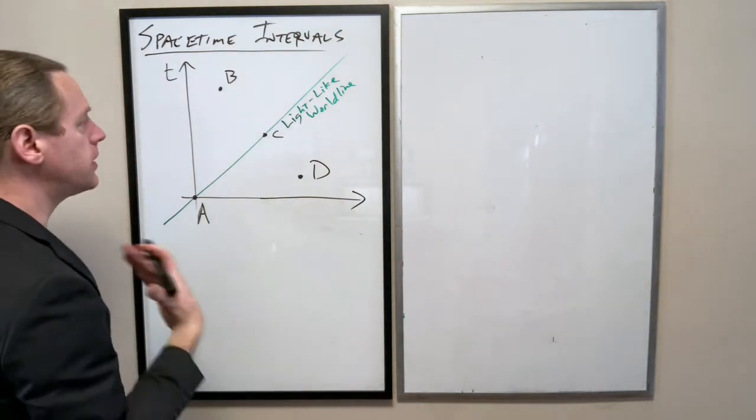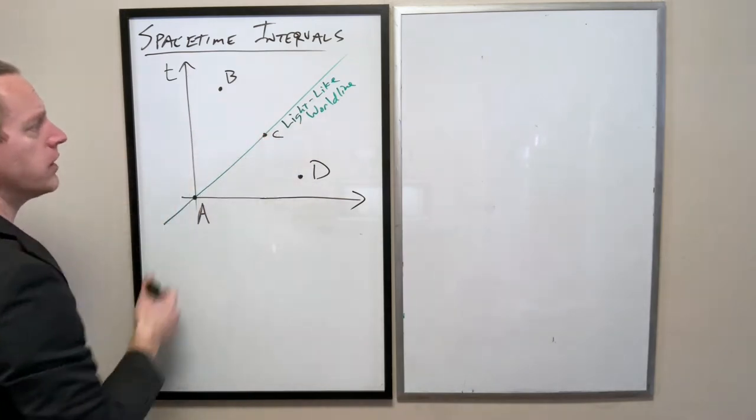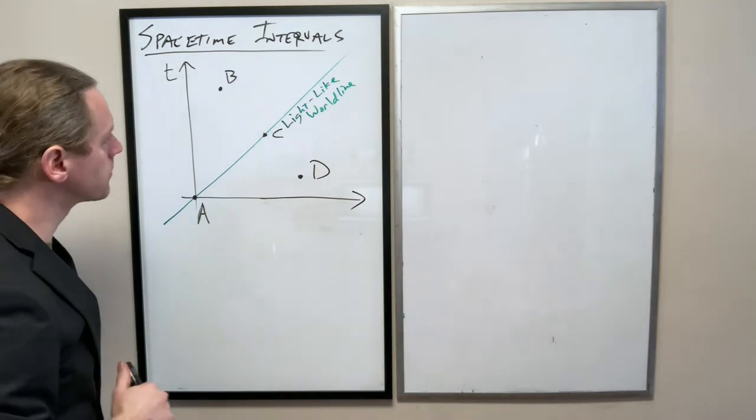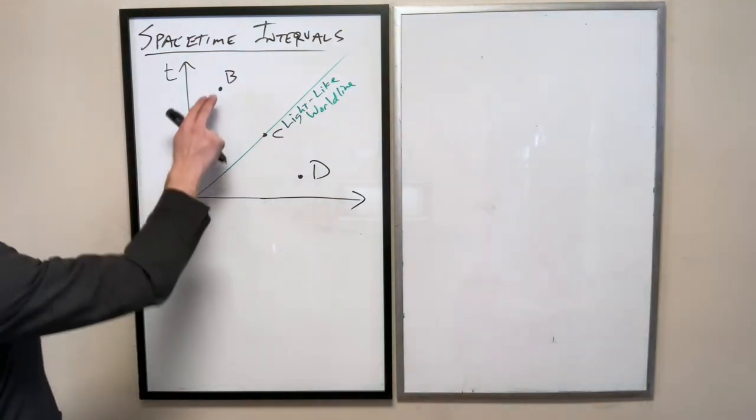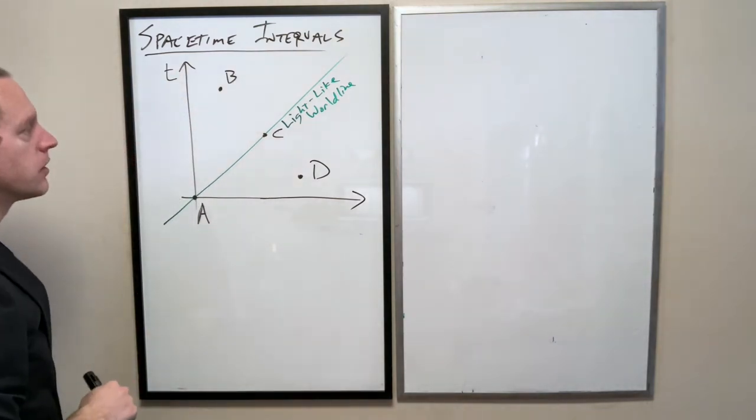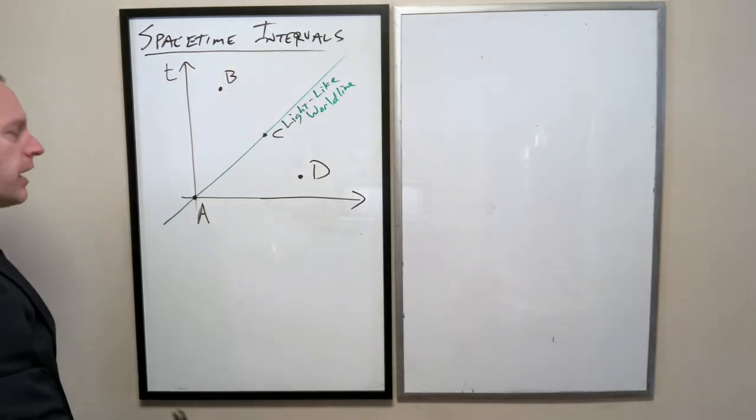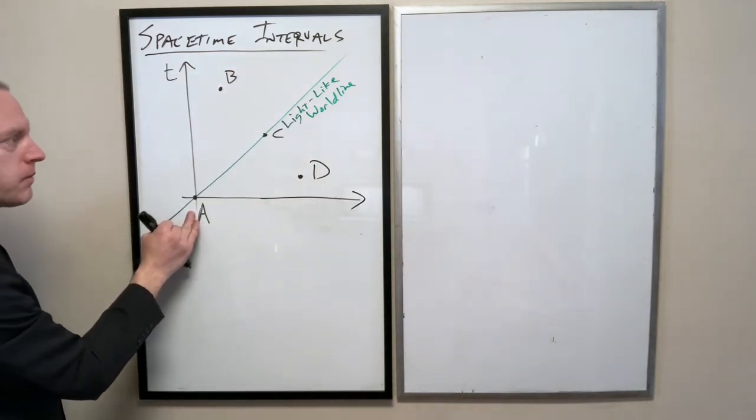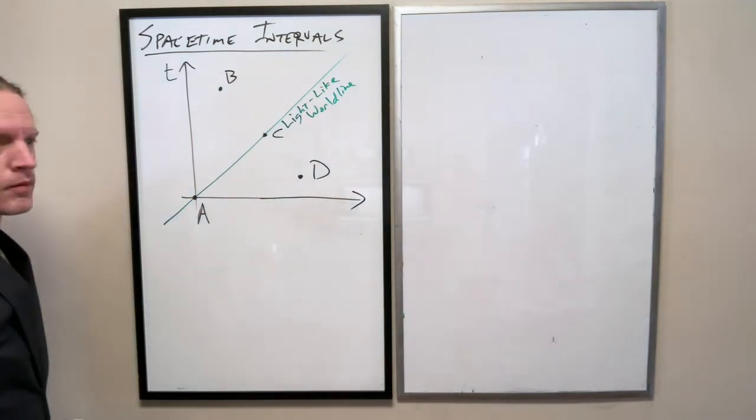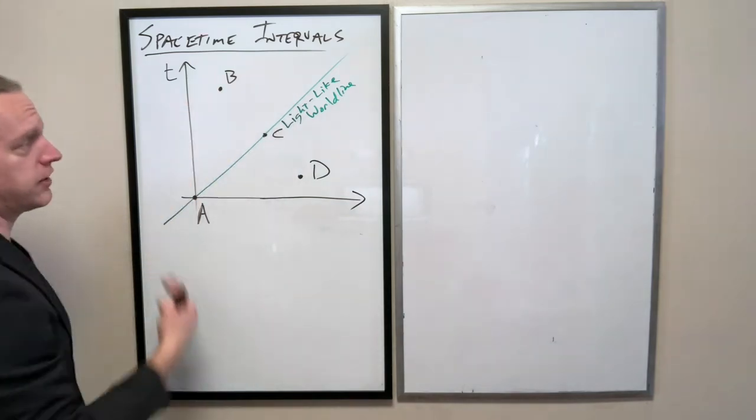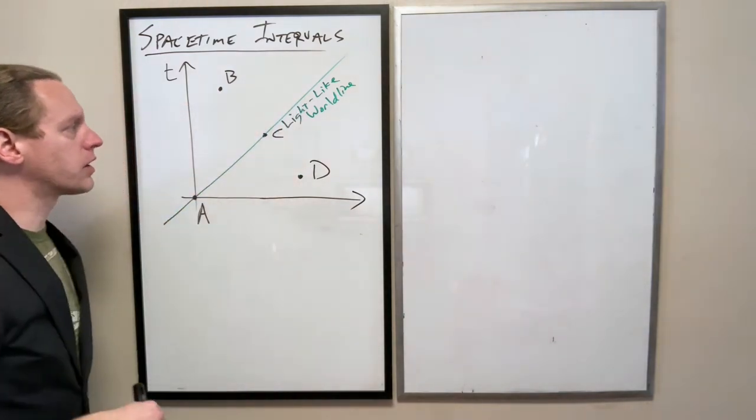And now hopefully you can see, of those three points, which of these three events B, C, and D fall within the future light cone? Only event B falls within. Which of these three events fall outside of the light cone for A? D. And then event C is directly on the light cone, because that's essentially how we're defining that light cone, by a light-like world line.